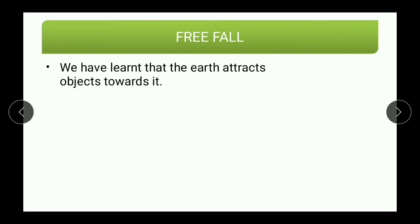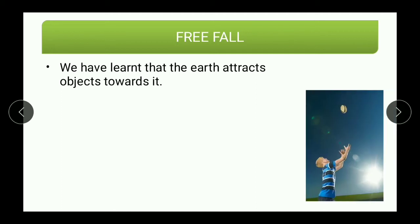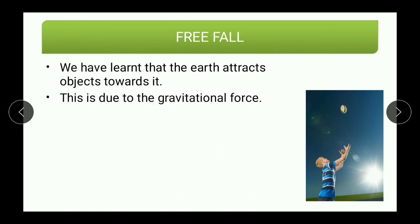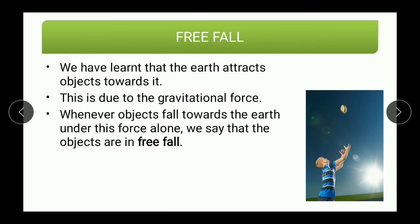Let us move on to the next topic: free fall. We have learnt that earth attracts objects towards it. Every object that you throw in an upward direction is bound to come back because earth attracts it — the reason is obviously gravitational force. This is shown by an image where a boy is throwing a ball upward, and obviously it will fall back downward. Whenever an object falls towards earth under gravitational force alone, we say that object is in free fall. Any object which falls under the influence of gravitational force alone is called free fall.